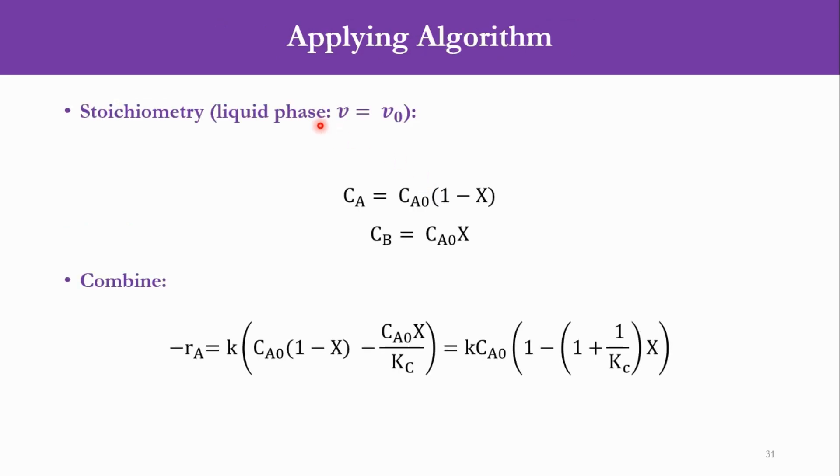Since it is a liquid phase system, we will say V = V0, which is volumetric flow rate; it will remain the same. If it would have been a gas phase system, then we had to proceed differently. If you remember, V = V0(1 + εX)(P0/P)(T/T0), so that equation would have come into place. Now CA = CA0(1 - X) and CB = CA0X. If you apply the previous concept of stoichiometry, you can easily get these values.